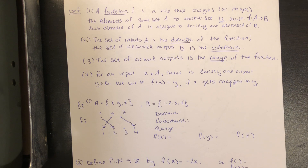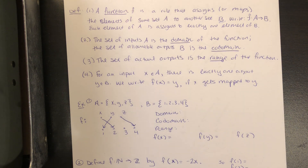If we want to know the actual outputs of the function, that's what we call the range. So co-domain is the allowable outputs, the possible outputs. The range is a subset of that — it's the actual outputs of the function.